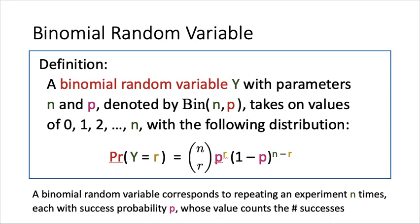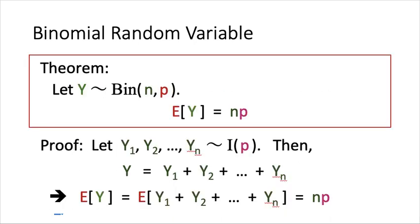How about the expected value of a binomial random variable? Suppose Y is a binomial random variable Bin(n, p) with parameters n and p. Then the expected value of Y is equal to n times p.